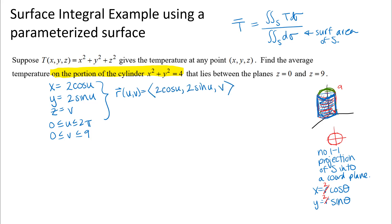This is a one-to-one projection from this rectangle in the u, v plane. If I draw that in the u, v plane — as we did when we did substitutions for multiple integrals — every point in that u, v plane corresponds to a unique point on this surface. So there are no two u, v points that correspond to the same point on my surface, meaning I do have a one-to-one projection between my surface and this rectangle.